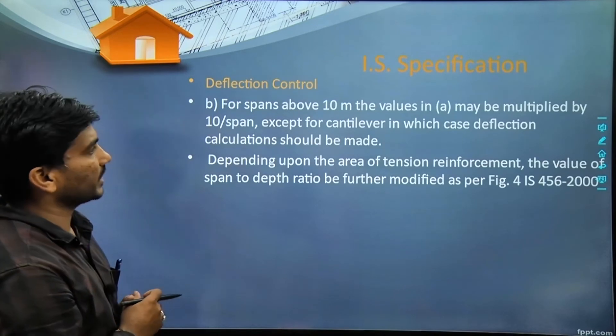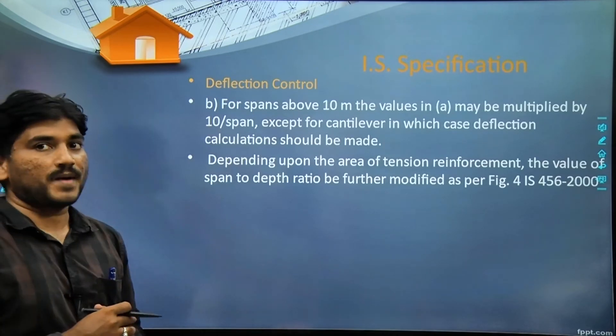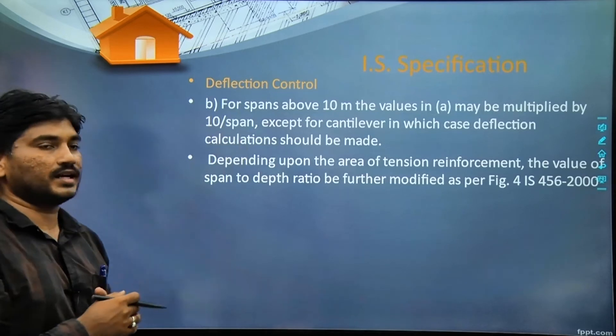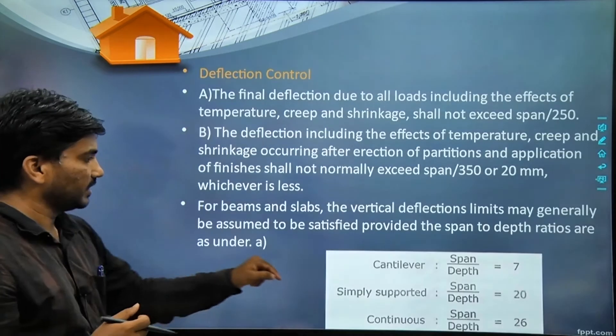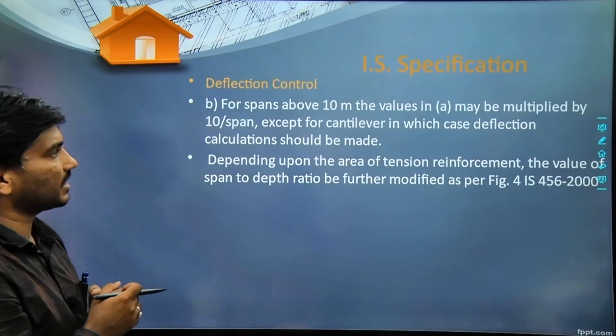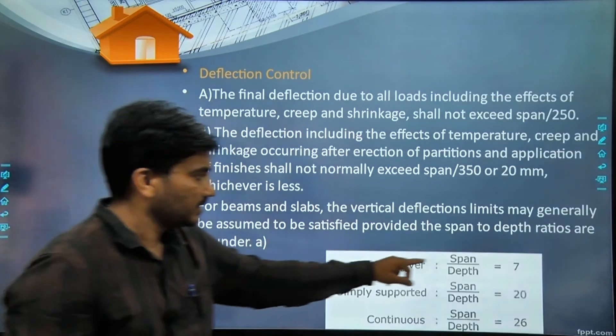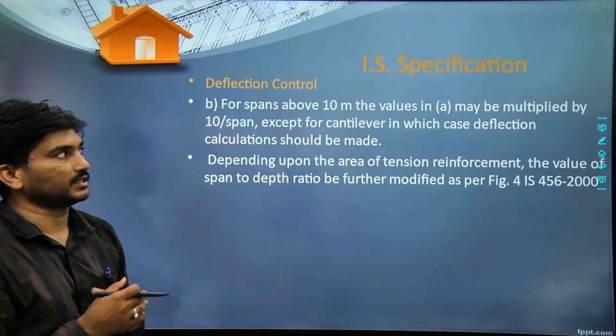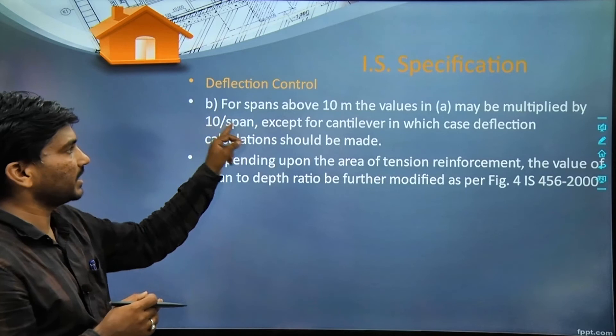For deflection control, if the span is more than 10 meters - if span is less than 10 meters then we use these clauses - but if it's more than 10 meters, then what to do? These values 7, 20, and 26, you have to multiply by 10 by span, multiply 10 by span.